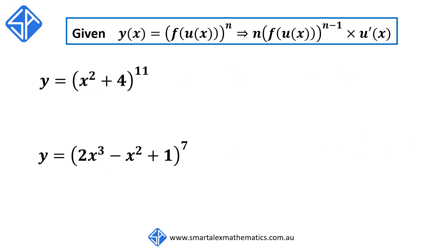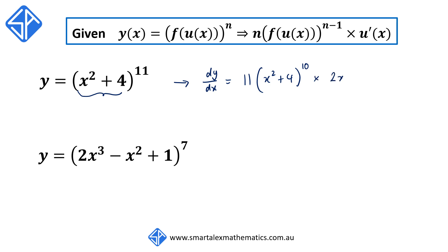Our third example: y is equal to x squared plus 4 to the power of 11. Applying the chain rule again, dy/dx — we're going to put the power 11 at the front, we're going to reduce the power of the original function by 1, so we get 11 times x squared plus 4 to the power of 10, and we're going to multiply by the derivative of what's inside the bracket, which in this case is 2x. When we tidy this up we're going to get 22x times x squared plus 4 to the power of 10.